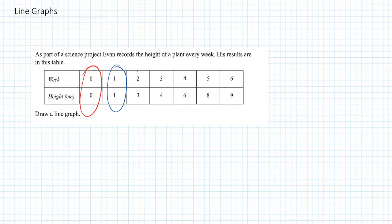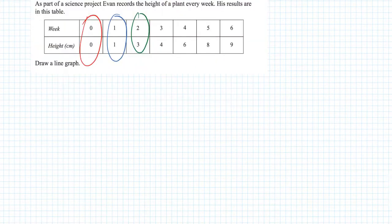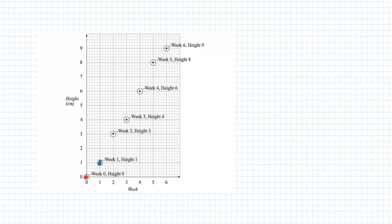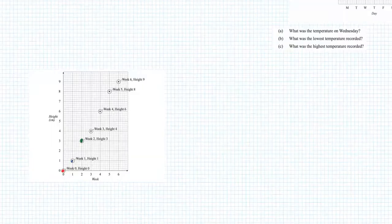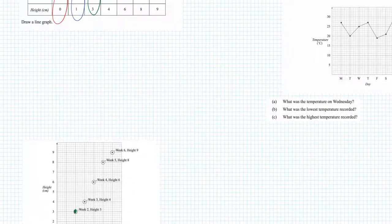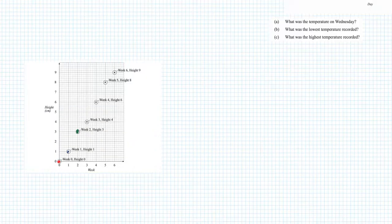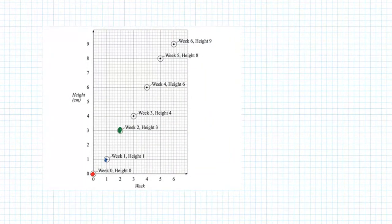Carrying on again, week two height three. So we find week two and we make sure we write it at the point three. So that paired data point is there. This continues through the graph, you mark crosses or dashes on there to indicate where those data points lie.